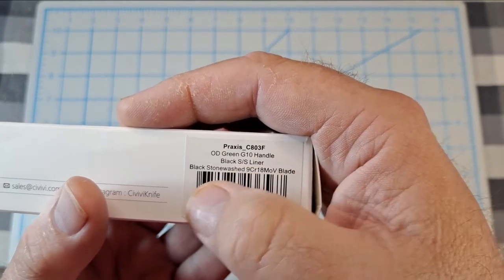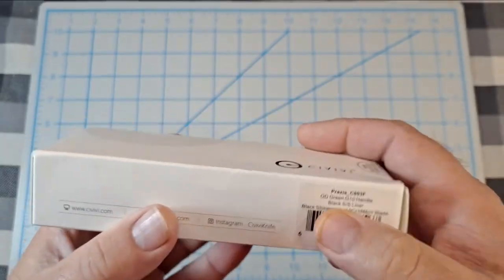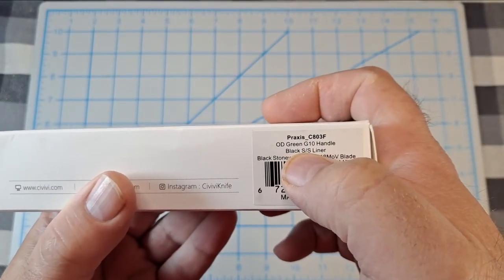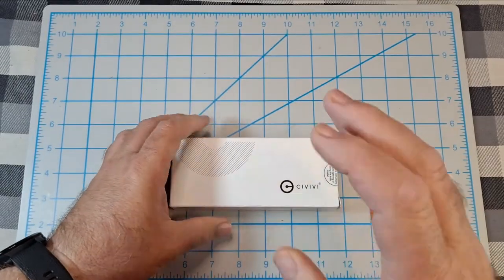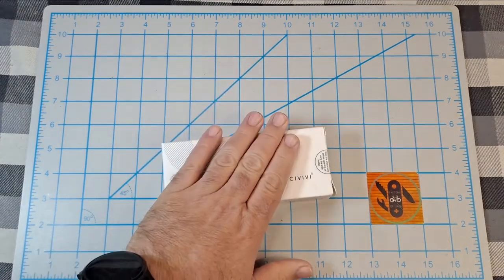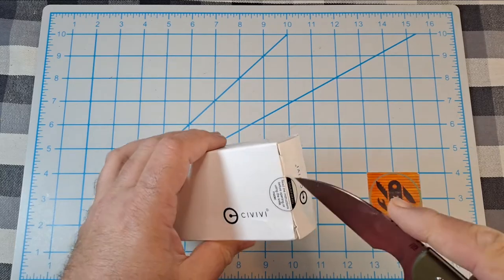It's the Civivi Praxis CA03F. It's OD green G10 handle, black stainless steel liners, black stonewashed 9cr18mov blade. That's the difference - the black stainless steel liners. If you remember, the original ones, most of the models have gold liners. That's why I never bought it.